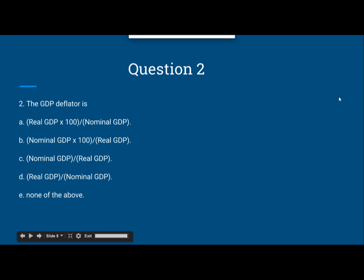Question 2. The GDP deflator is: A. Real GDP times 100 divided by nominal GDP. B. Nominal GDP times 100 divided by real GDP. C. Nominal GDP divided by real GDP. D. Real GDP divided by nominal GDP. Or E. None of the above.